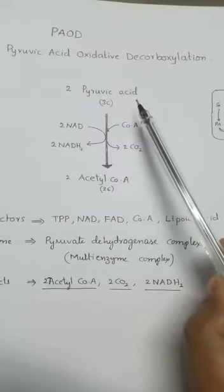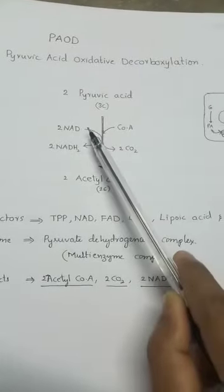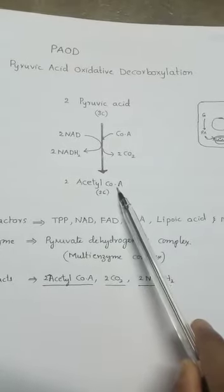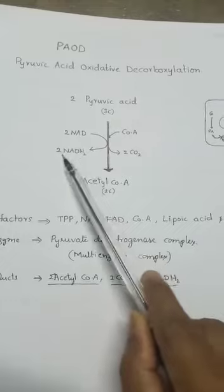In this step, two molecules of pyruvic acid are decarboxylated and undergo oxidation to produce two acetyl coenzyme A molecules, two CO2 molecules, and two NADH2 molecules.